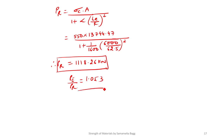So the crippling load by Euler's formula is 1.053 times the load by Rankine's formula. Now for the second part, where PR and PE are equal, I need to calculate the value of LE.